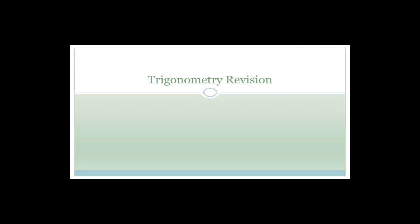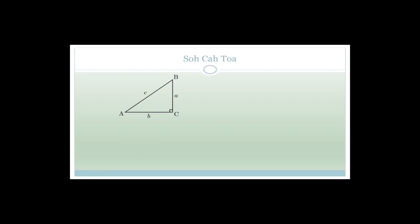Moving on to trigonometry. We're first going to go through quickly, very briefly, the stuff that you should know from last year. Then we're going to move on to trig identities and the 180 plus or minus rule if we have enough time today. The first thing you should know is SOHCAHTOA — Silly Old Hens Cackle and Howl Till Old Age.